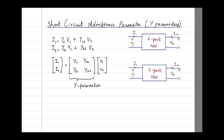Whatever be the two-port circuit, if you are able to find out these equations, from that you will be able to extract the Y parameter. The only question is how do you find these equations, or what is the definition of Y11, Y12 — the same thing we had done in Z parameter. From the equation itself, you can see that Y11 will be found out if you make V2 equal to 0.